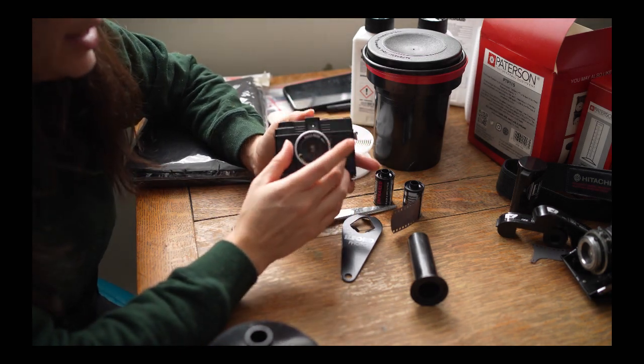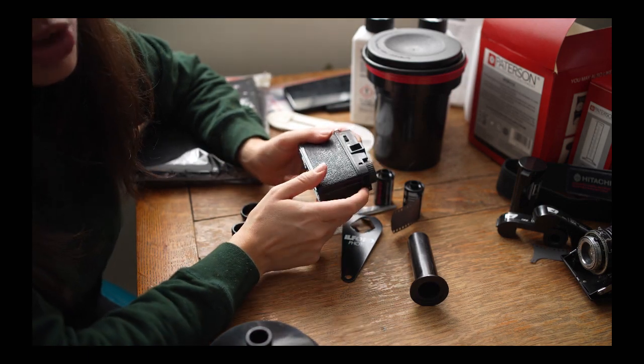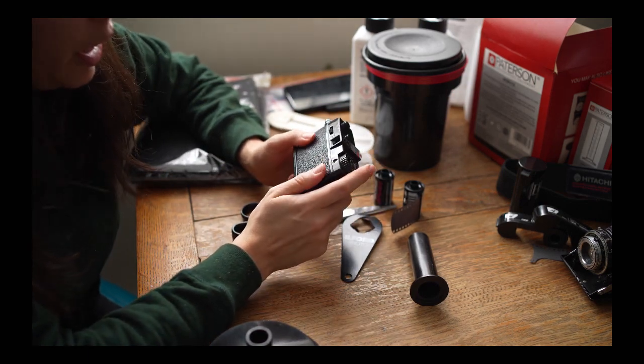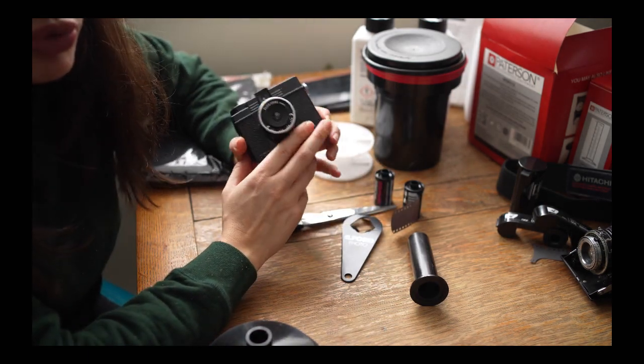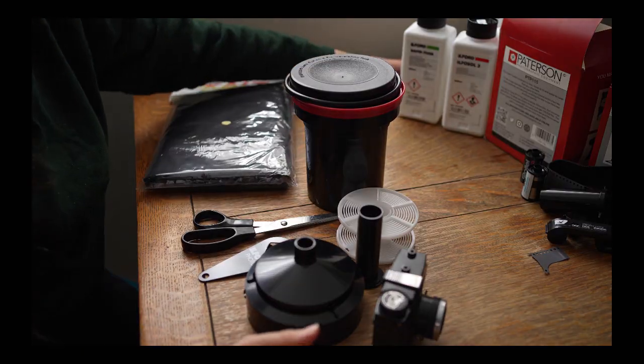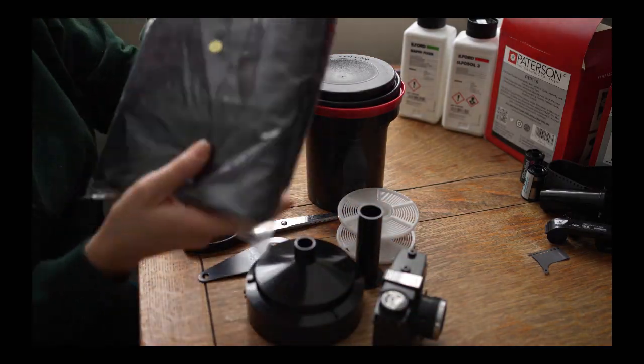So I'm going to use it inside the changing bag, open it up, and then take the film out inside the changing bag so that I don't ruin my film and that I can try developing it. So this might be the first roll that I do. These are the items I'm going to put inside my changing bag. Here is my changing bag.